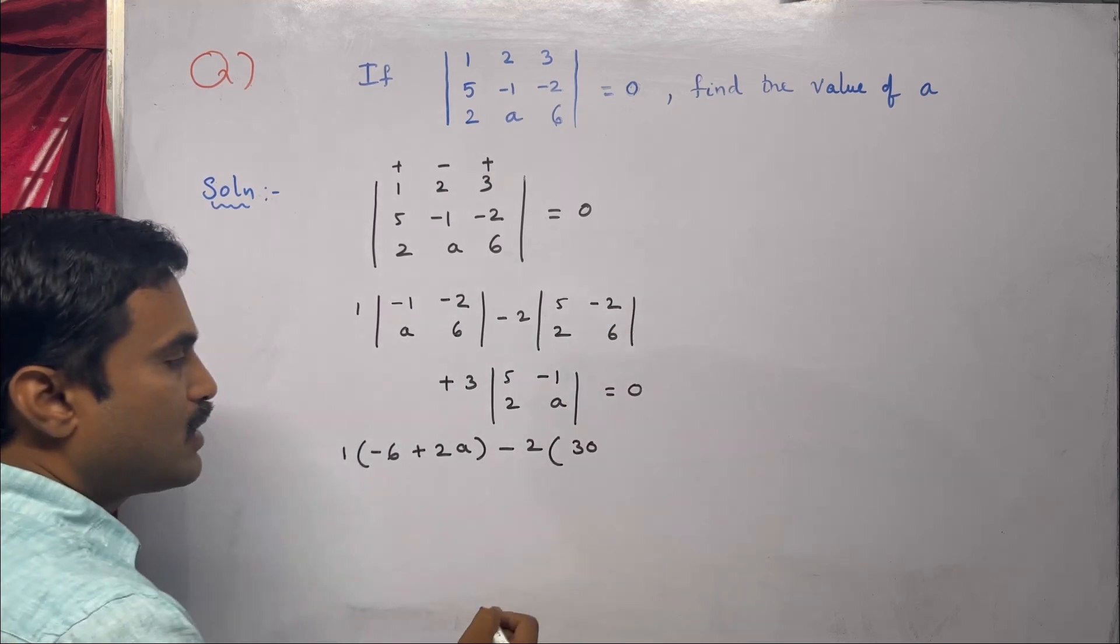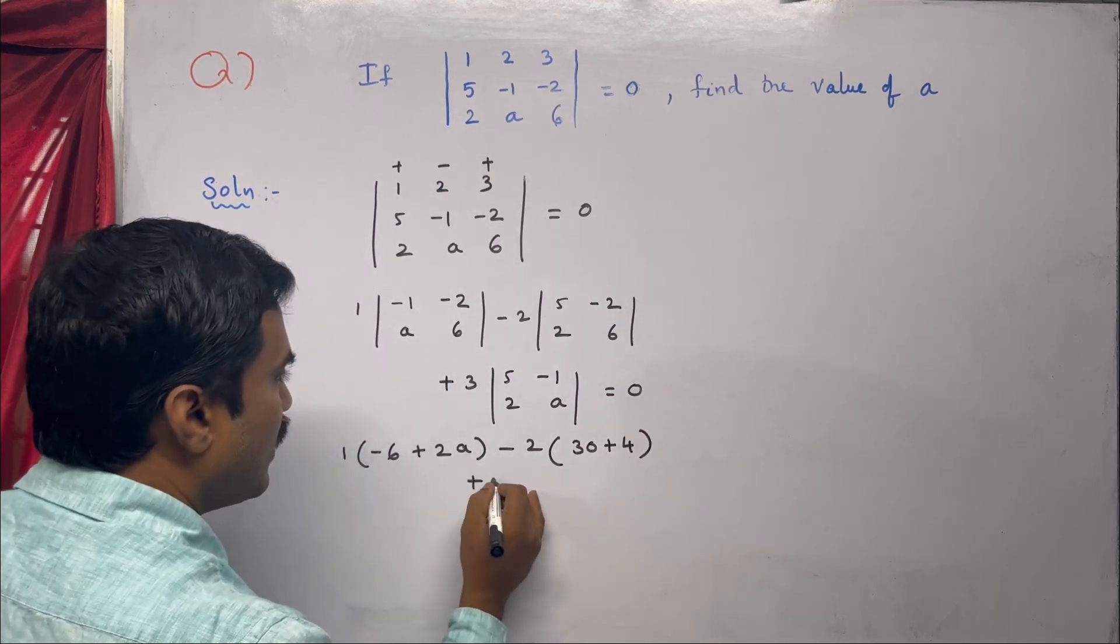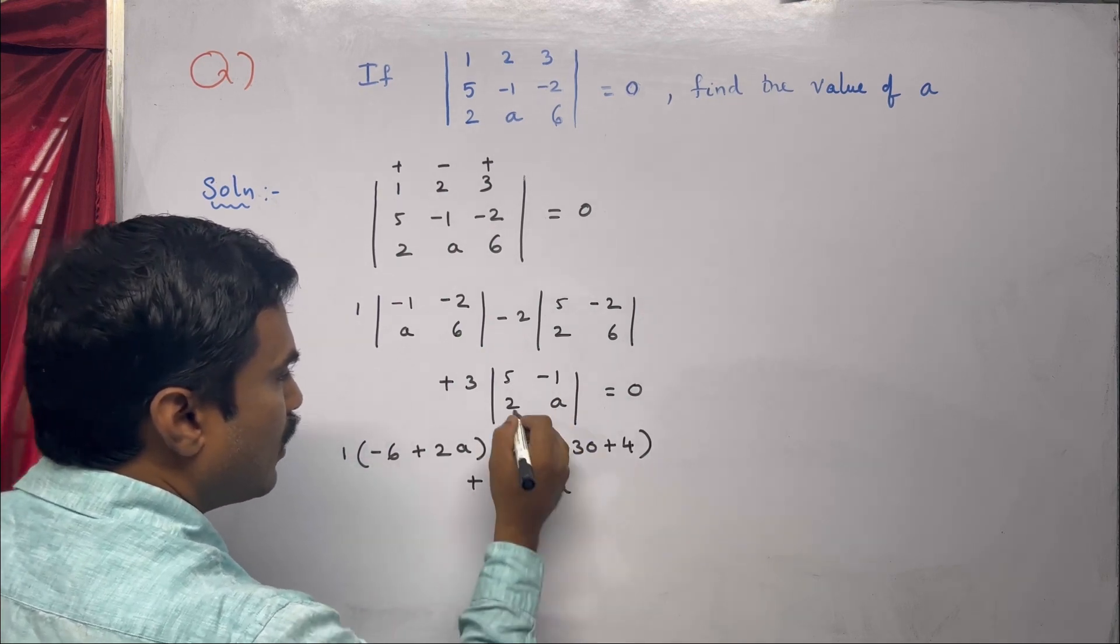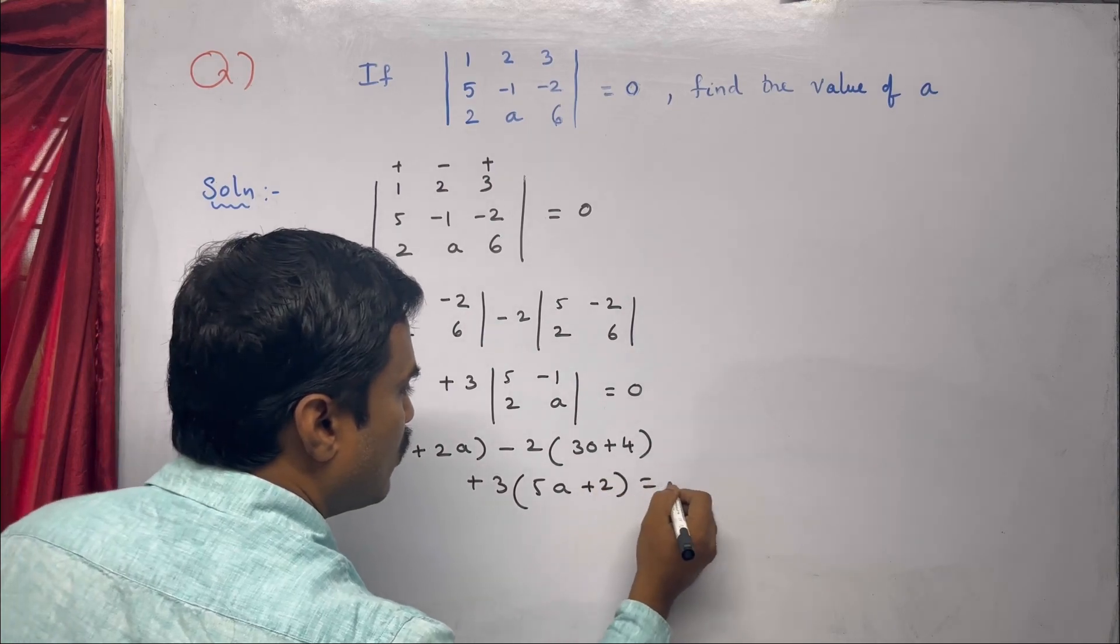For the second determinant, minus 2 times: 30 plus 4 equals 34, so -2 times 34 equals -68. Then plus 3 times: 5 times a equals 5a, and the other product gives plus 2. This all equals zero.